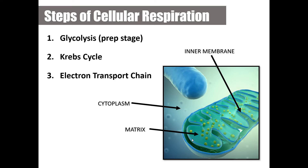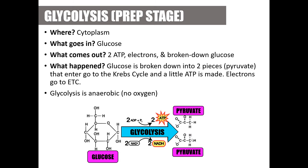Each of these steps can get complicated, so we'll cover the high points. Each step is performed in a different area of the cell. Glycolysis happens in the cytoplasm, the Krebs cycle takes place in the mitochondrial matrix, and the electron transport chain occurs in the folded inner membrane of the mitochondria.